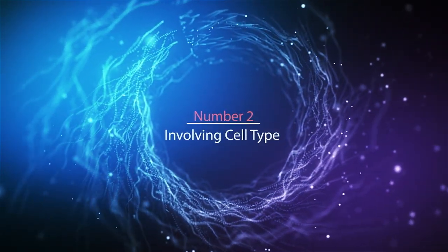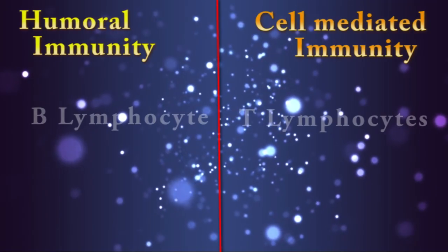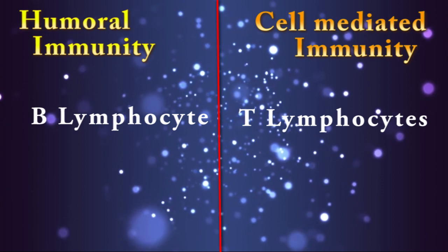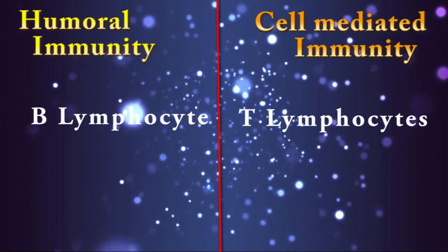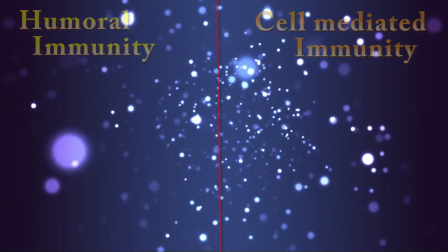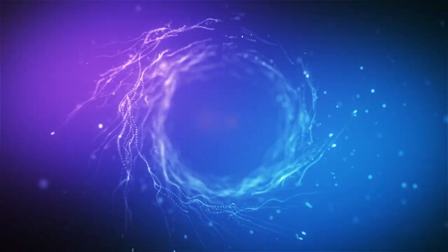Difference number 2: involving cell type. Humoral immunity is mediated by B lymphocytes, but cell-mediated immunity is mediated by T lymphocytes.